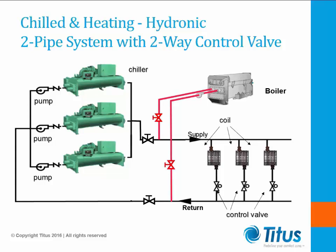If you try to use the two-way control valve with constant flow, you will have system problems. Once the zone temperatures are satisfied on some or most of the zones, the two-way control valves will close to stop the cold or hot water from flowing through the fan coils. However, the pumps will continue trying to push the constant water to all the terminal units. Any fan coil units with open valves will receive the extra flow, the entire system pressure changes, and the system will become unbalanced. This is not recommended unless you have a system with less than 10% diversity on the loads.